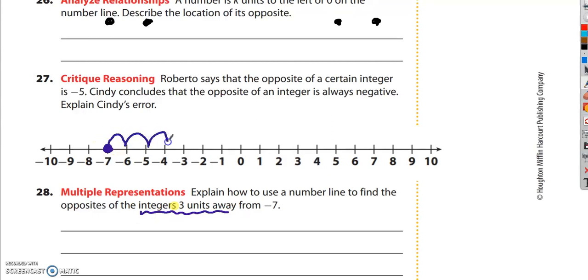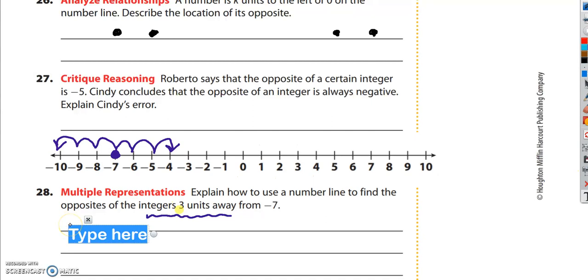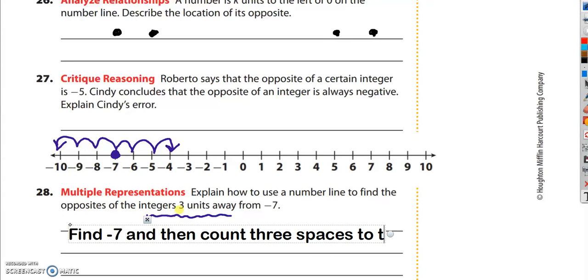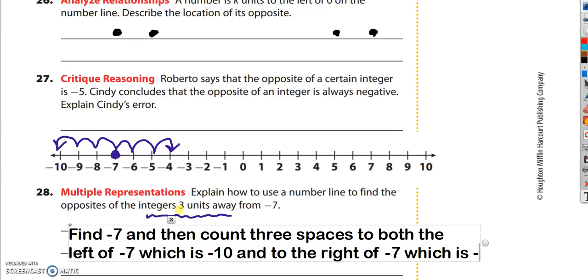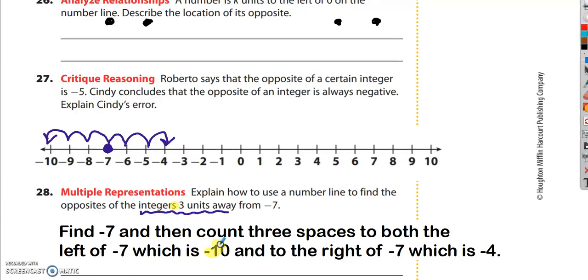And we're looking for the integers that are 3 units away. 3 units away could be to the right: 1, 2, 3. It could be this one. Or it could be to the left: 1, 2, 3. It could be this one. I would say find negative 7 and then count 3 spaces to both the left of negative 7, which is negative 10, and to the right of negative 7, which is negative 4. The two numbers are negative 10 and negative 4.